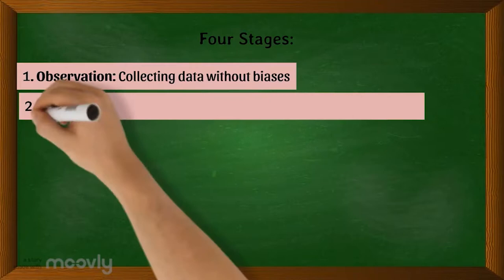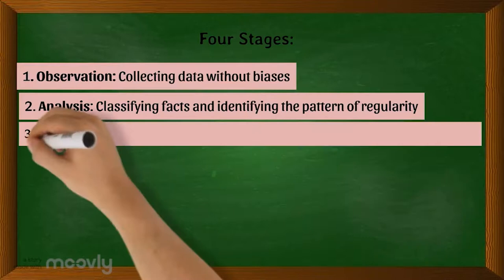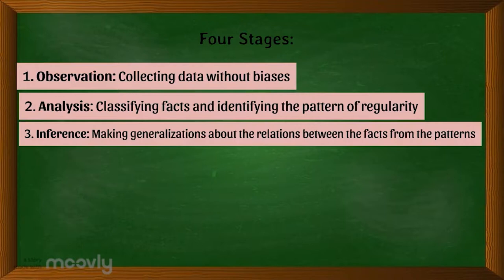First, observation: collecting data without biases. Second, analysis: classifying the facts and identifying the patterns of regularity. Third, inference: making generalizations about the relations between the facts from the patterns. Fourth and lastly, confirmation: testing the inference through further observations.